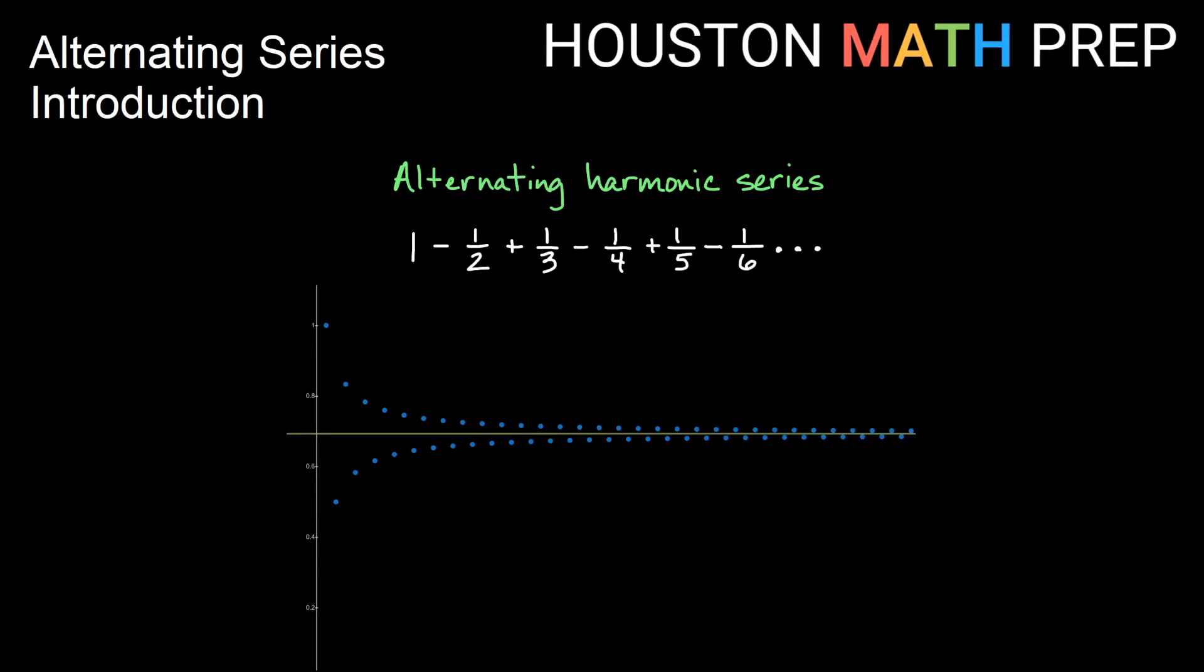And it turns out if you keep looking further and further down the line, you'll see that these partial sums get closer and closer to the value ln of 2. And so the alternating harmonic series, if we just plot it this way, actually has an infinite sum of ln of 2 when you look at it this way.